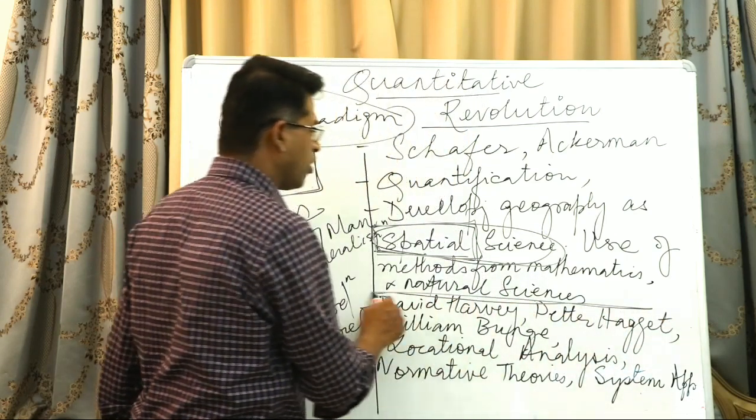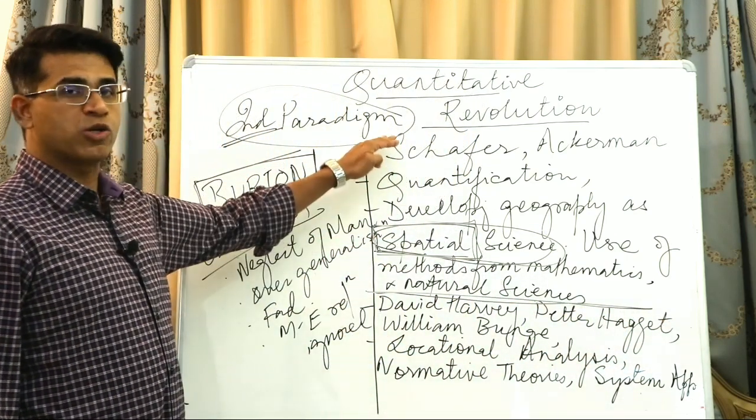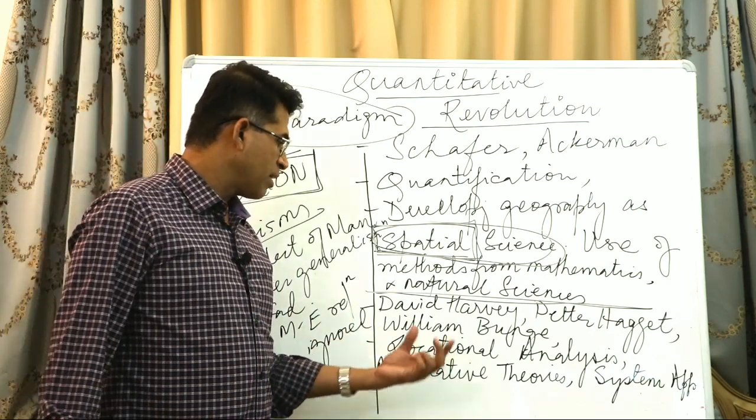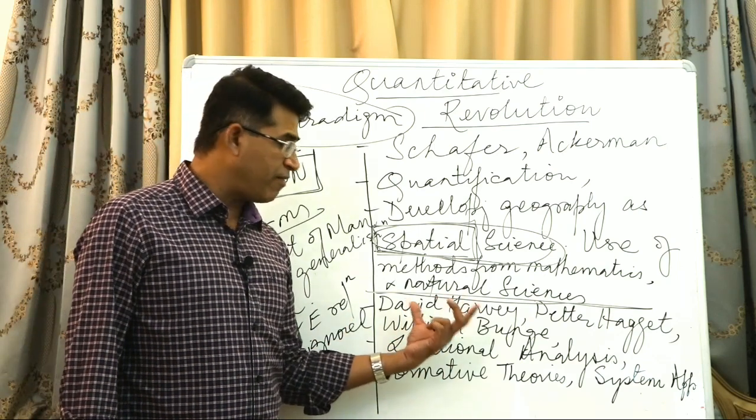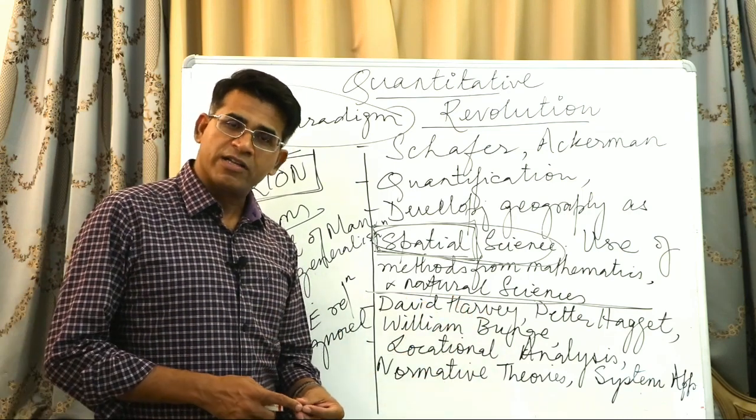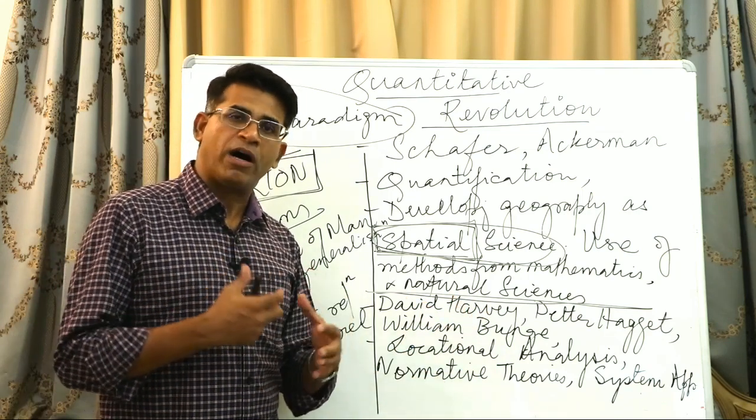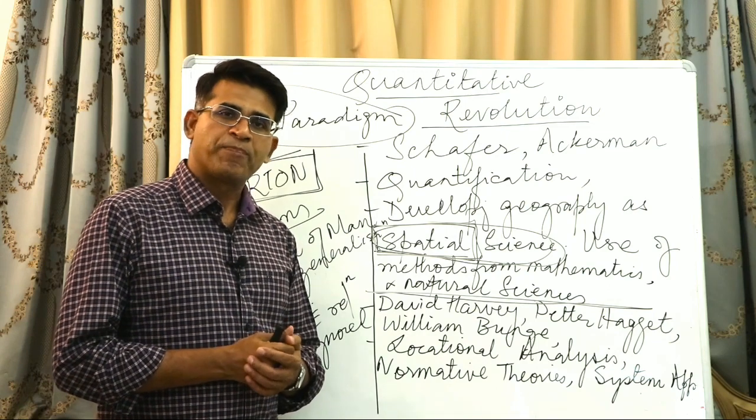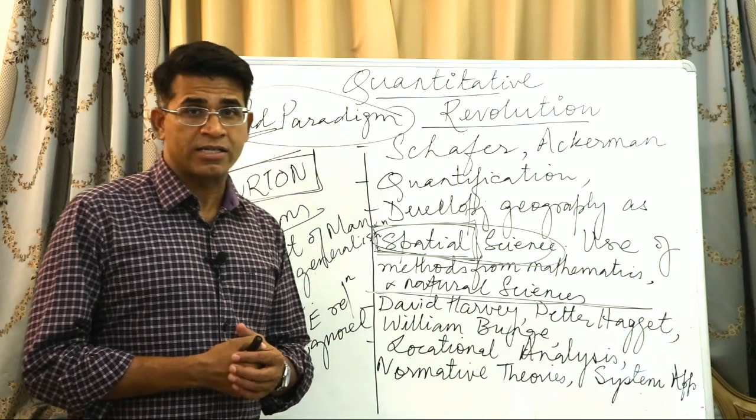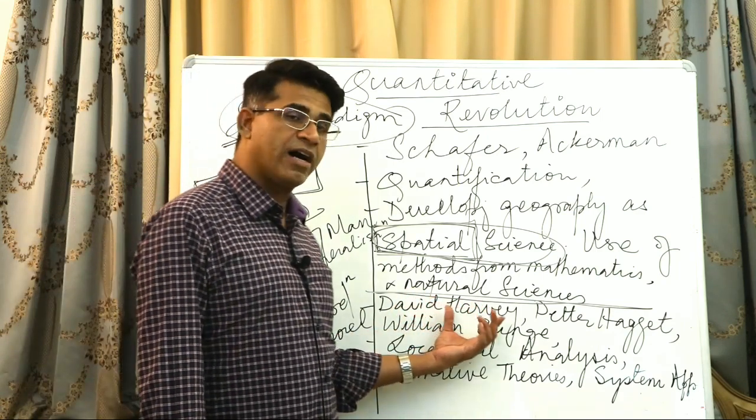This is what geography was trying to become according to Schaefer. Now, who are the major proponents? We have David Harvey, a very important contributor who eventually converts into one of the very powerful radical geographers. He starts getting radicalism into geography influenced by the Marxist tradition.